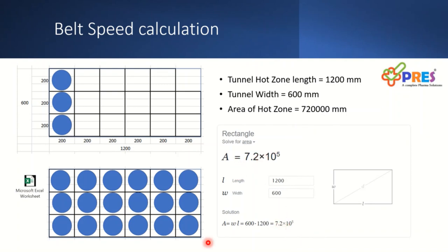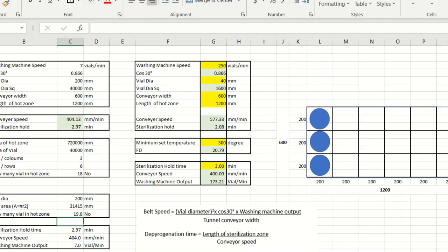If my tunnel speed is 200mm per minute, as per my mathematical model there should be an output of 3 vials per minute. If it is 400mm per minute, it should be 6 containers per minute.